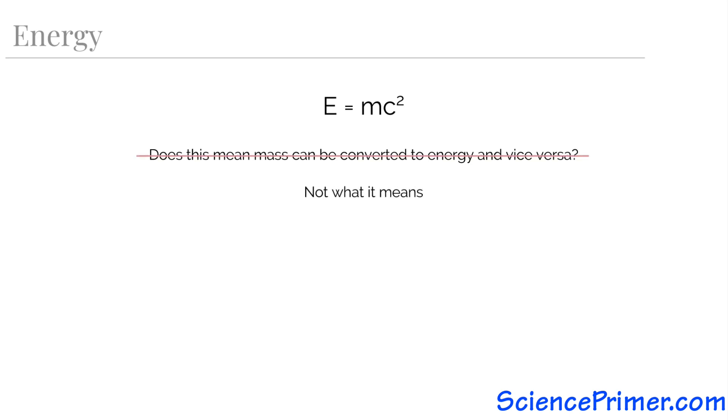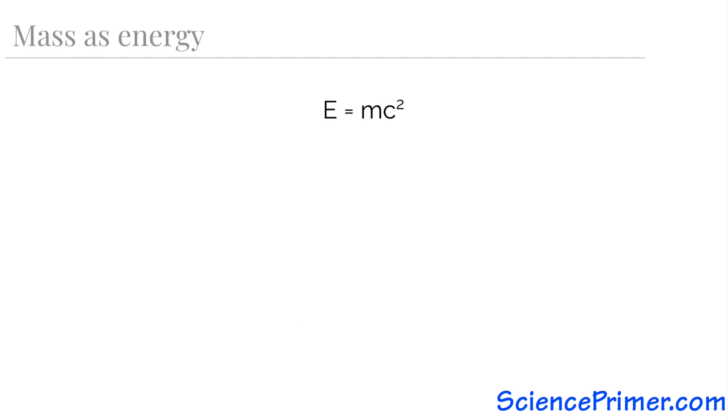But this isn't really what it means. To illustrate this, consider the equation x equals y. Is the interpretation of x equals y that x can be converted to y? No, it's that x and y are equal, that x and y are, at some level, different representations of the same thing. Getting back to E equals mc squared, the best way to interpret this equation is that mass is equivalent to energy and energy is equivalent to mass, meaning that like x equals y, energy and mass are interchangeable at some basic level.